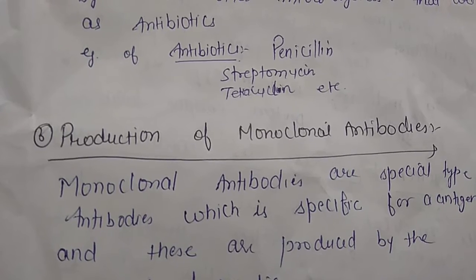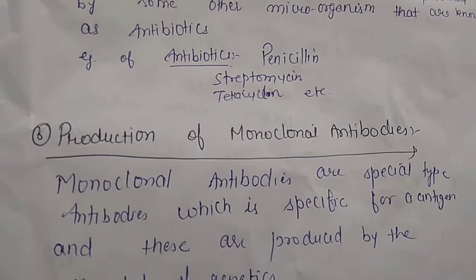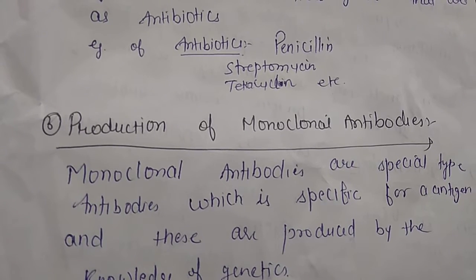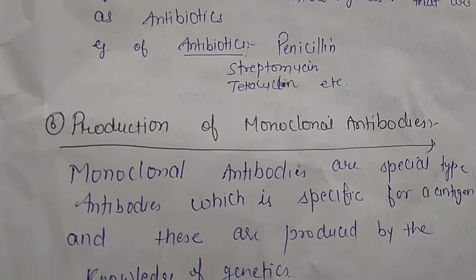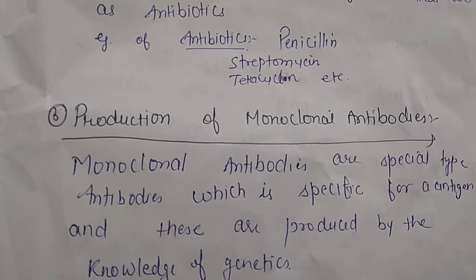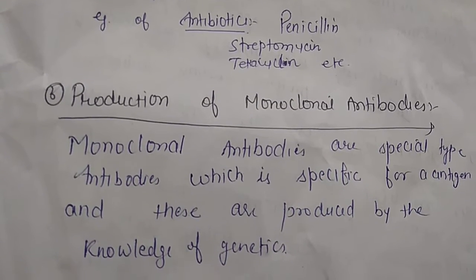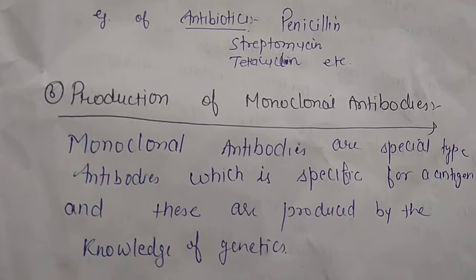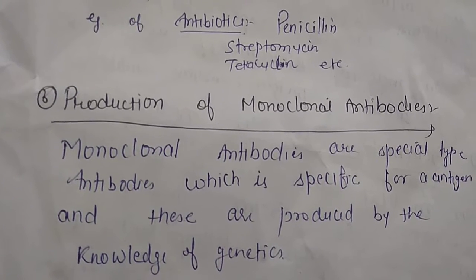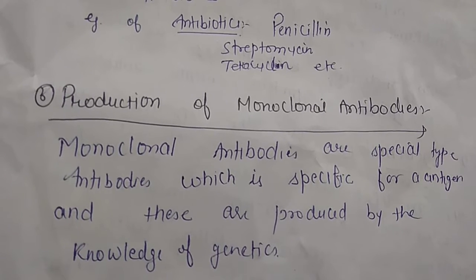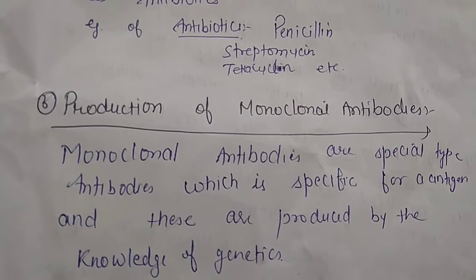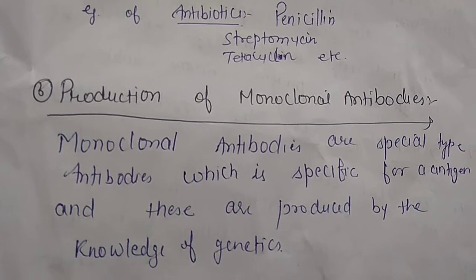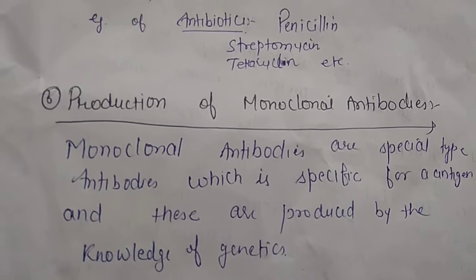Biotechnology also aids in the production of monoclonal antibodies. Monoclonal antibodies are specific types of antibodies which are specific for a particular antigen — they are synthesized only for that antigen and will only target that specific antigen. These are produced with the help of knowledge of genetics.